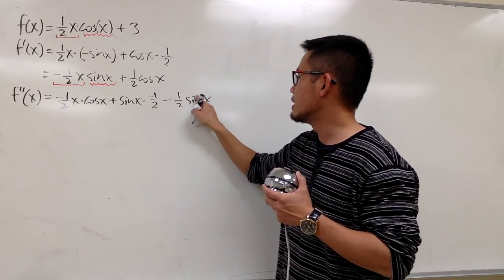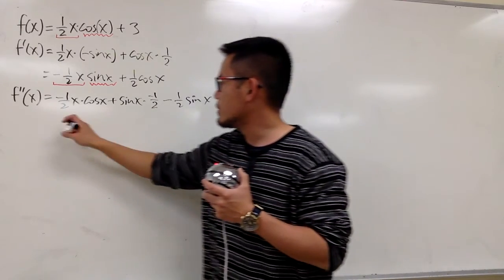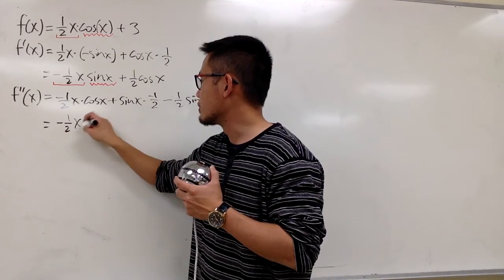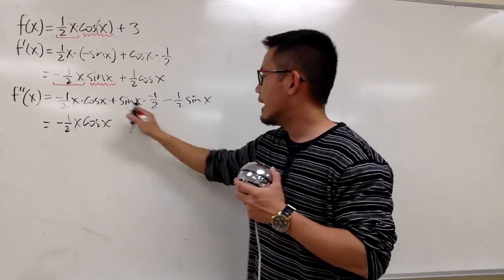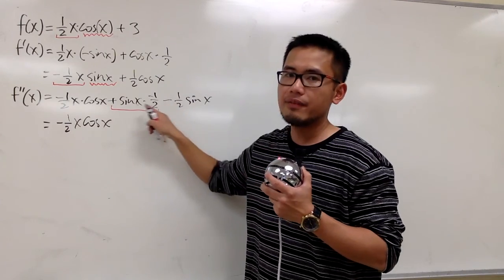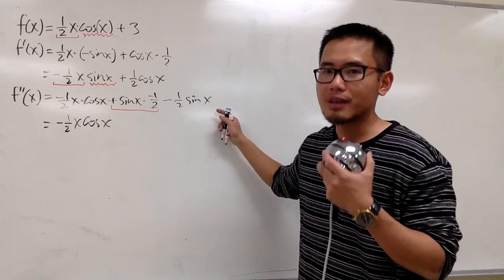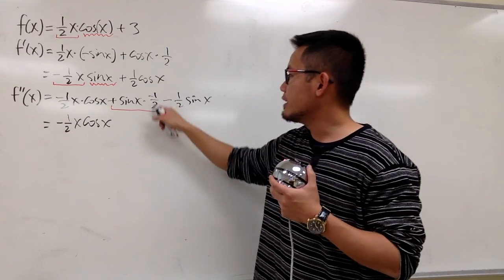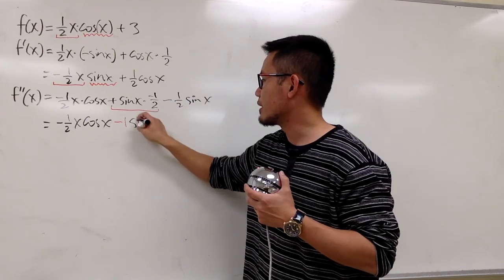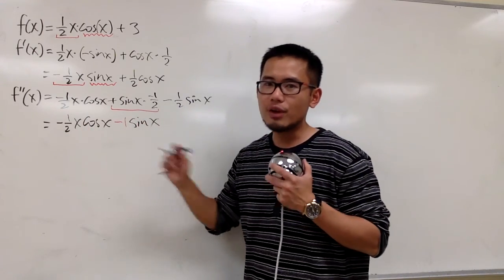Next, the derivative of cosine is negative sine, and the ½ stays, so we have negative ½ sine x. So right here we have negative ½x times cosine x, and then negative ½ sine x minus ½ sine x. We can combine those terms: negative ½ minus ½ is just negative 1, so we have negative sine x. This is the second derivative.